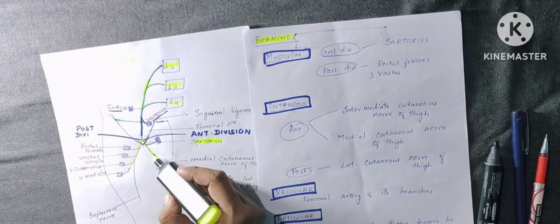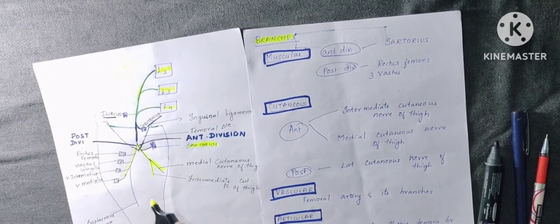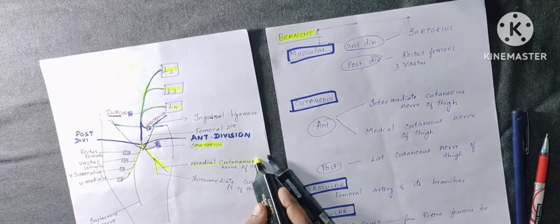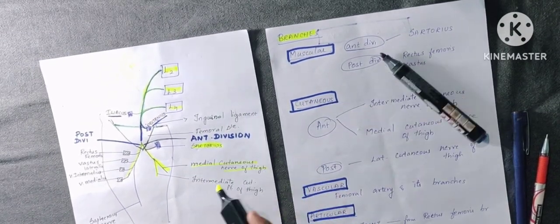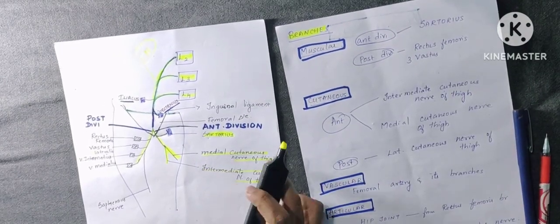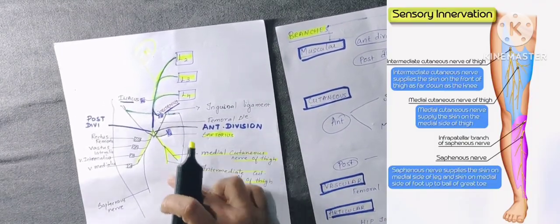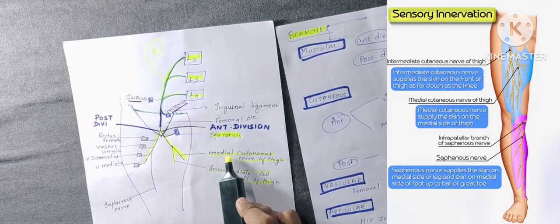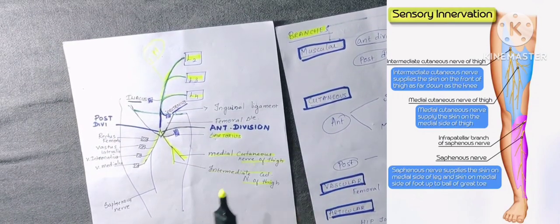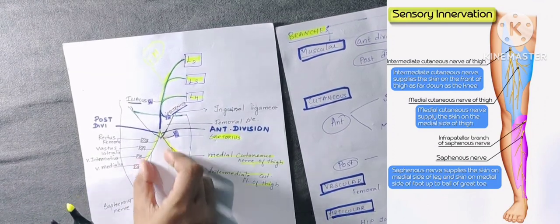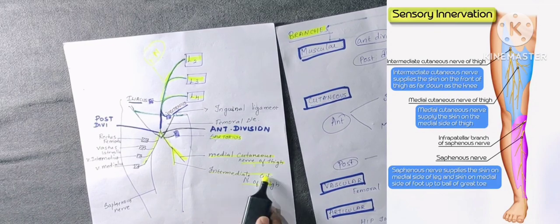The anterior division further divides into two cutaneous branches. One is the medial cutaneous nerve of the thigh, which supplies sensation to the medial side of the thigh region. The second is the intermediate cutaneous nerve of the thigh, which supplies the intermediate region of the thigh.